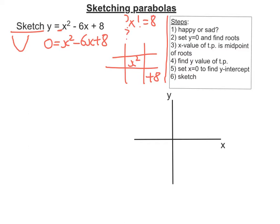And I'm looking for 2 numbers that multiply to get 8, but add to get negative 6. And the two numbers that are going to work for that are negative 4 and negative 2. So negative 4x and negative 2x.